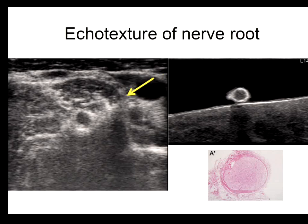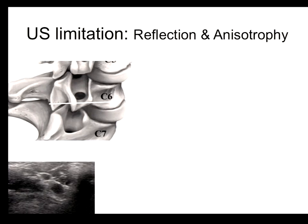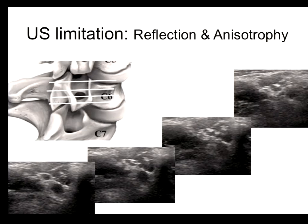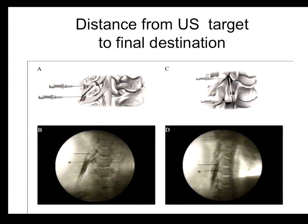The echotexture of the nerve root is very hyperechoic due to the single neurofascicular or small number of neurofascicles and their large size. If you find the nerve root, you can scan this area. When scanning more proximally toward the deep nerve root, it becomes difficult to distinguish the root from perineural tissue due to surrounding fat. The target is the perineural and intra-circumneural space of the inter-tubercular groove between the anterior and posterior tubercle of the caudal vertebra, outside the foramen.